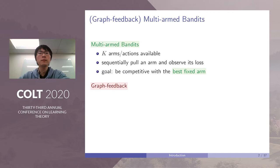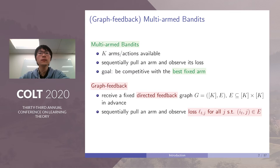And the goal is to be competitive with the best fixed arm in hindsight. Graph feedback MAB or GMAB is a generalization of MAB problem. At the beginning of the game, the learner first receives a fixed directed feedback graph G with K nodes, each of which represents an arm. The learner still sequentially pulls an arm i_t, incurs its loss, but observes the loss of arm j if there is a directed edge from node i_t to j in graph G. And this can be viewed as a classic MAB problem if G only contains self-loops. And the goal is exactly the same as MAB.